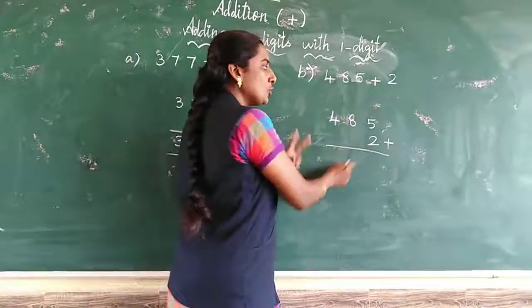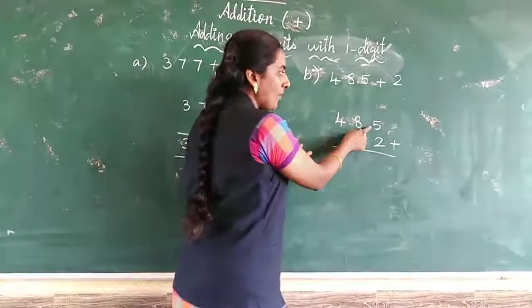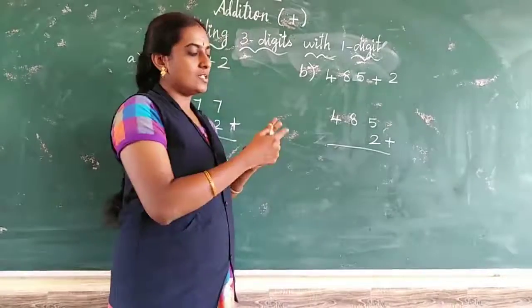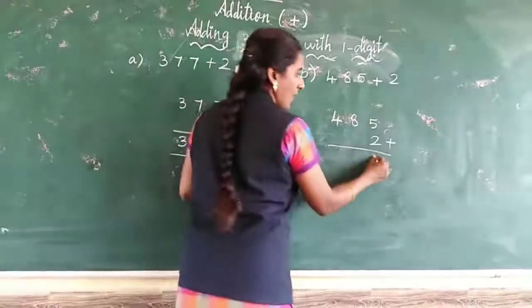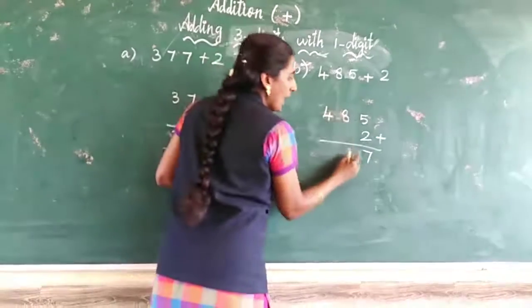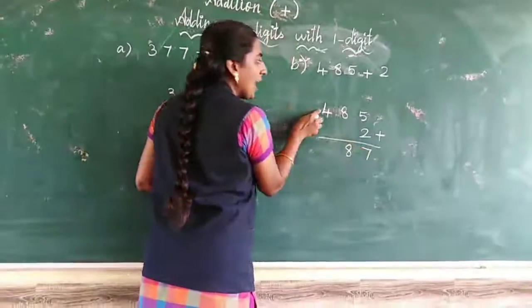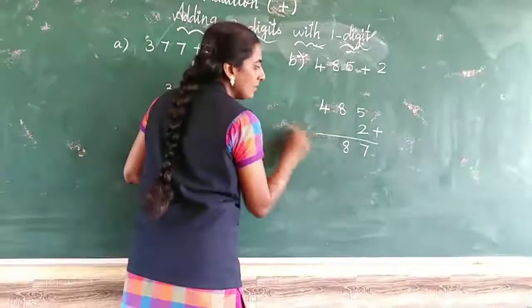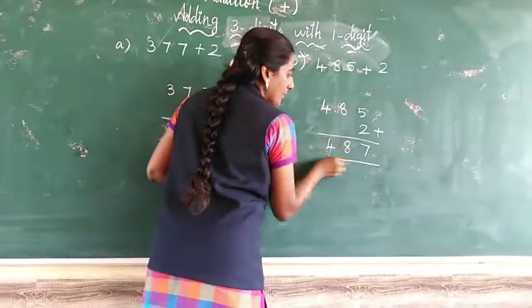5 in the mind, 2 on the fingers. What comes after 5? 6, 7. Next the tens place. Do we have any number? No, so write it in the answer. The hundreds place is also like this, so write it in the answer.